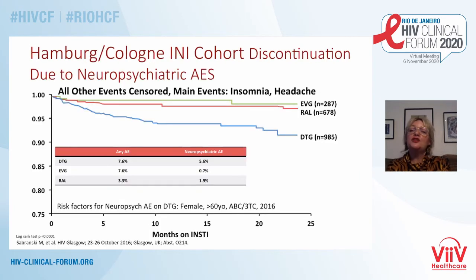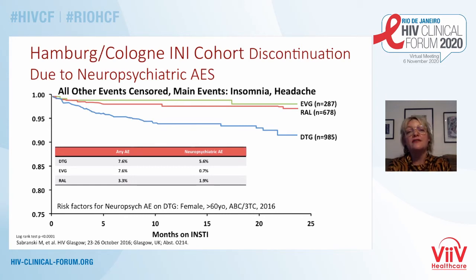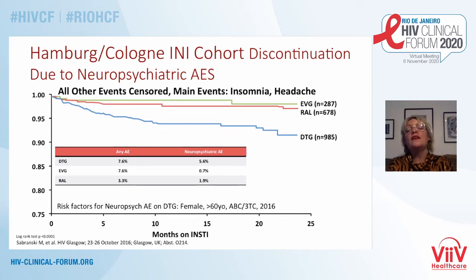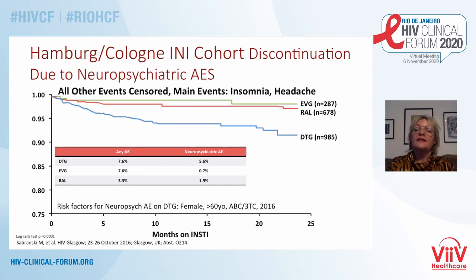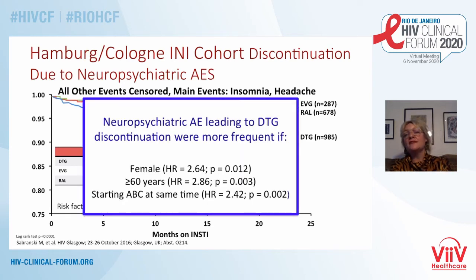Data from a German cohort looking at the risk of discontinuing an integrase inhibitor for a neuropsychiatric adverse event shows you are significantly more likely to discontinue dolutegravir than elvitegravir or raltegravir. Of course, one problem here is confounding — were there reasons that people may be on dolutegravir, the higher barrier unboosted option, compared to elvitegravir or raltegravir? Where people on dolutegravir did discontinue for neuropsychiatric side effects, that was more likely if they were female, if they were older, but also if they were starting abacavir at the same time — and this abacavir signal is an important one.